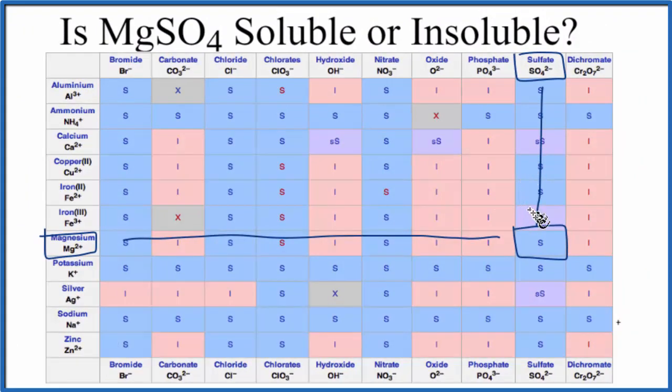There's one more way we could do this. We could just get some MgSO4, put it in water, and see what happens. Based on the rules and the solubility chart, we would expect that it would be soluble in water. This is Dr. B answering the question whether MgSO4 is soluble or insoluble in water. It should be soluble in water.